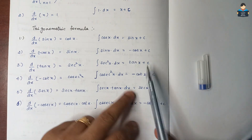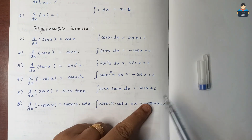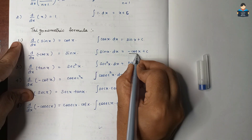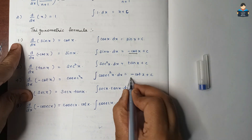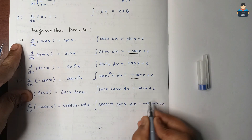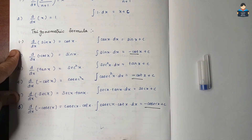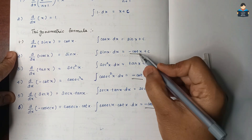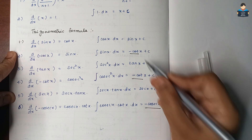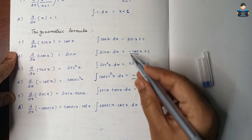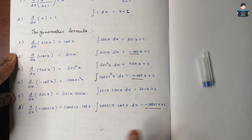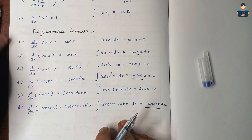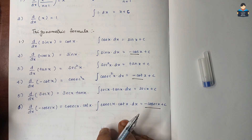Summarizing the trigonometric integrals: the integral of sin x is minus cos x; integral of tan x is minus log|cos x|; integral of cosec x gives minus cot x and minus cosec x terms. These are the reverse of differentiation results.